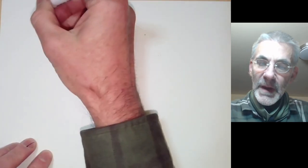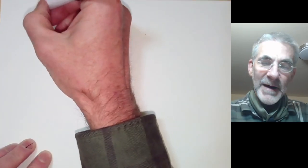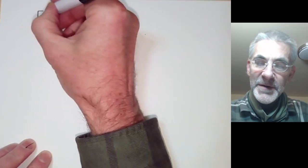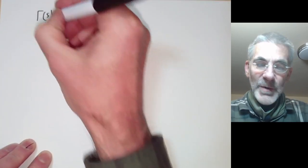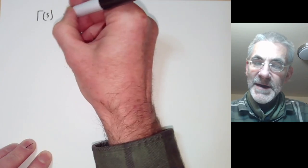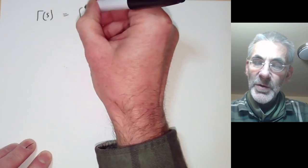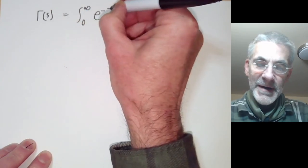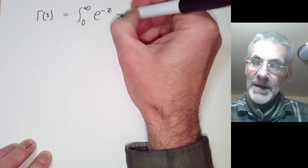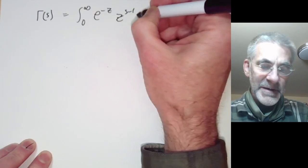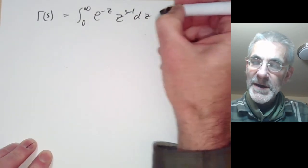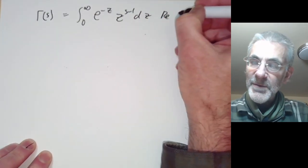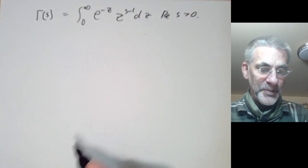Let's first apply this to the gamma function. We have gamma(s) is the integral from 0 to infinity of e to the minus z times z to the s minus 1 dz, for real part of s greater than zero.